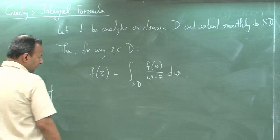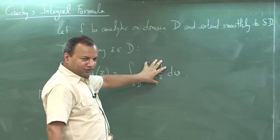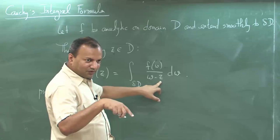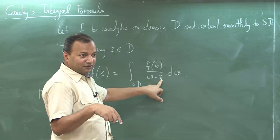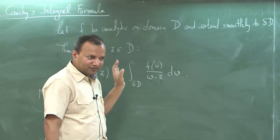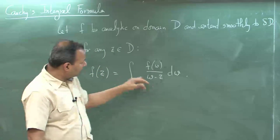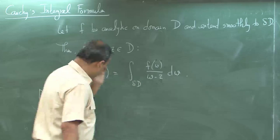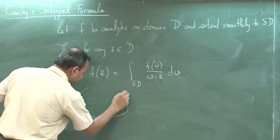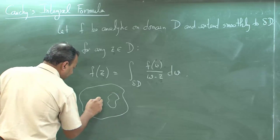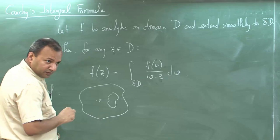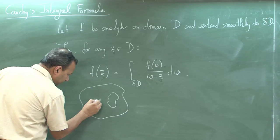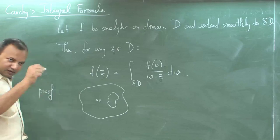This function f(w)/(w − z) is not analytic inside the domain because z is inside, and when w takes the value z this diverges. So it is no longer analytic everywhere. Except for the point z, this function is analytic at all other points.